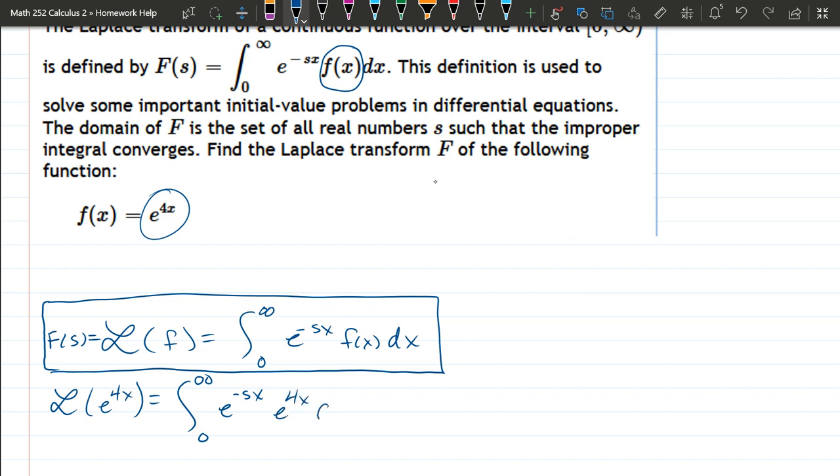All right, so how do we solve this? Well, it's an infinite integral so we're going to be careful at the very end. After we integrate, we'll apply a limit. But how do we actually get the antiderivative? Well, we have the same base so we can add the powers together.